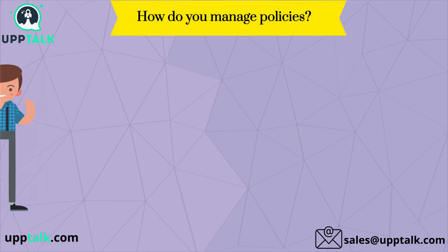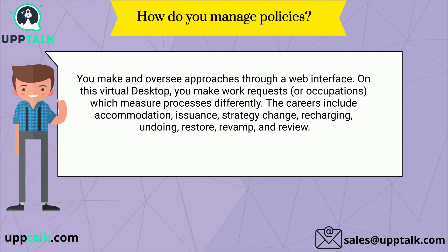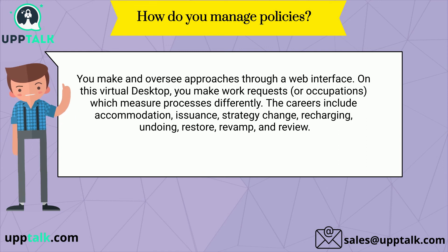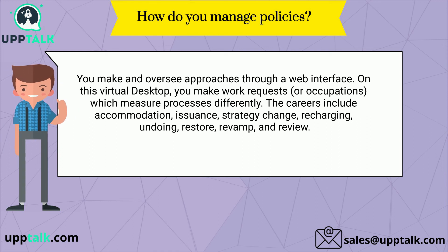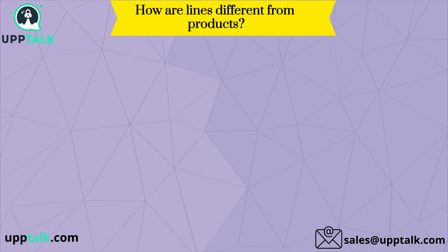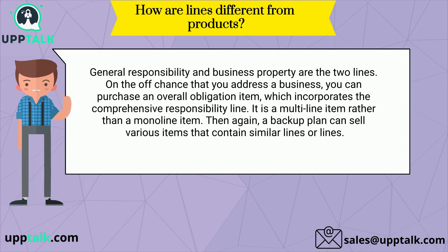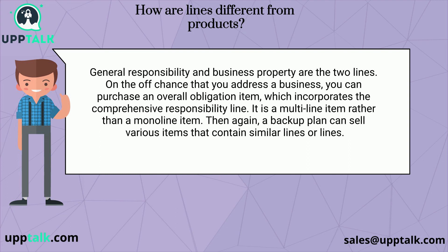How do you manage policies? Policies are created and managed through a web interface. On this desktop, you create work orders, or jobs, which process transactions. Jobs include submission, issuance, policy change, renewal, cancellation, reinstatement, rewrite, and audit. How are lines different from products? General liability and business property are examples of two lines. A business can purchase a general liability product which incorporates the general liability line — making it a multi-line product rather than a monoline product. A carrier can also sell various products that contain the same lines.